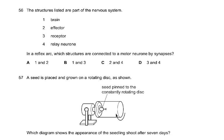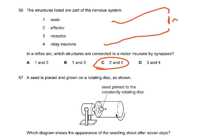In a reflex arc, which structures are connected to a motor neuron by synapses? The answer is C: two and four — the relay neuron and the effector. The sensory neuron connects to the relay neuron, which connects to the motor neuron, which connects to the effector (muscle). Effectors can only be muscles and glands.